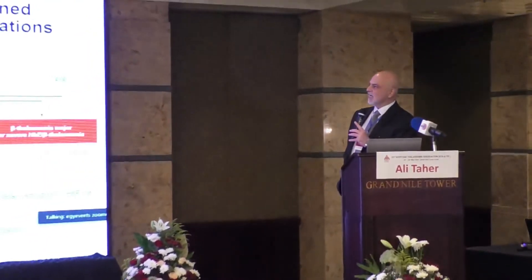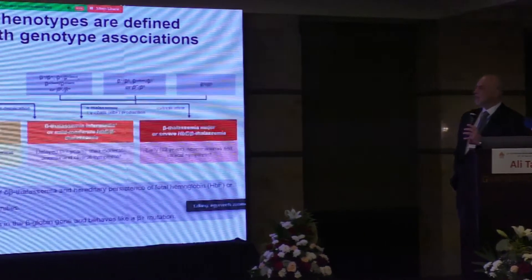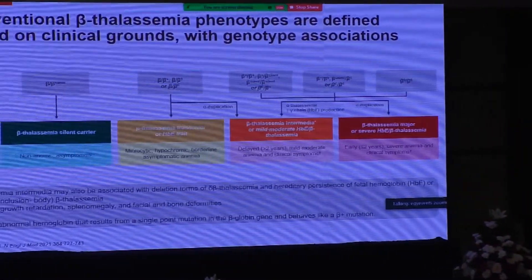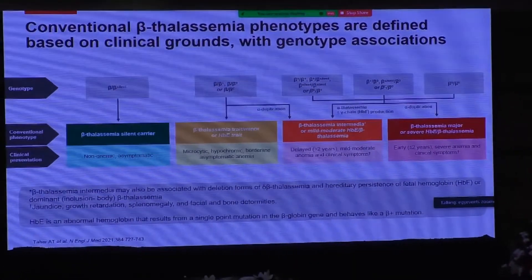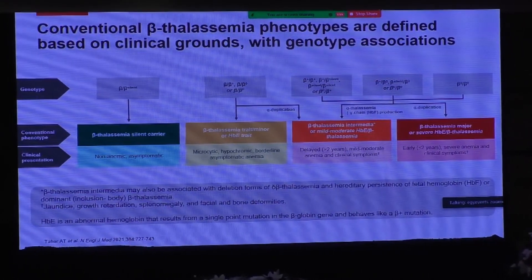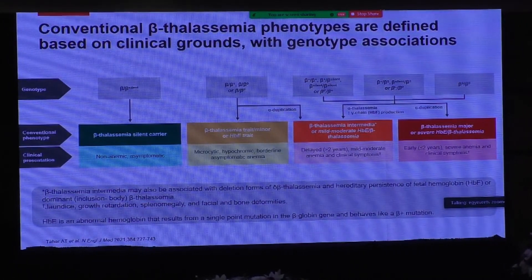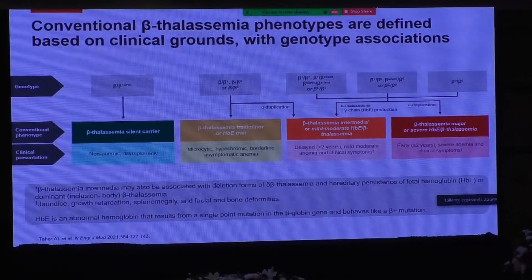I would like to start by reviewing the definitions of beta-thalassemia — from the conventional beta-thalassemia phenotypes into the genotype and into the clinical presentation. As most of you remember, we used to talk a lot about the genotype: beta-silent, beta-0, beta-plus, and these were related to conventional phenotypes like the beta-thalassemia silent carrier, the carrier, thalassemia intermedia, and beta-thalassemia major.